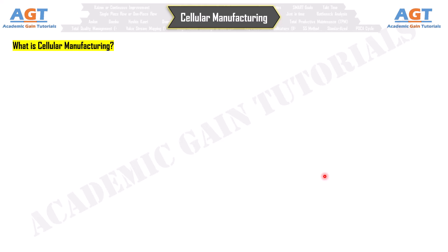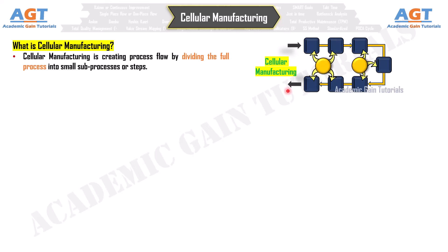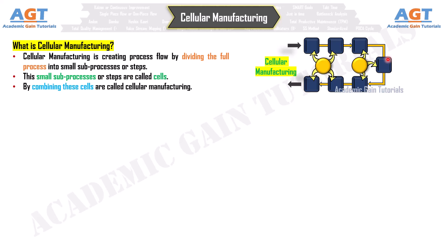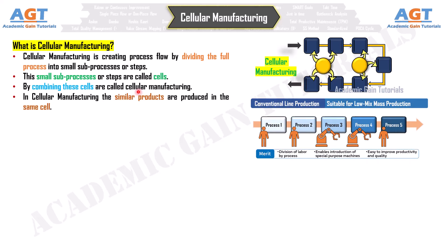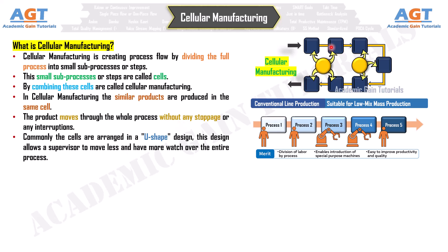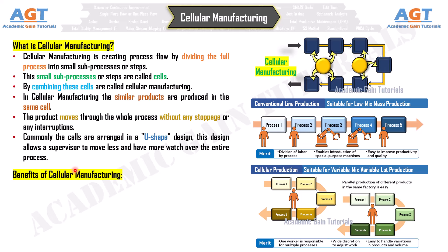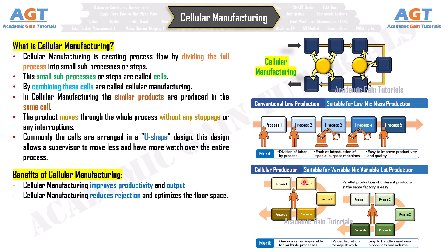Number 18: Cellular Manufacturing. Cellular manufacturing creates process flow by dividing the full process into small subprocesses or steps called cells. Combining these cells is called cellular manufacturing. Similar products are produced in the same cell, and the product moves through the whole process without any stoppage or interruptions. The cells are commonly arranged in a U-shaped design, allowing a supervisor to move less and oversee the entire process. Benefits: Improves productivity and output, reduces rejection, optimizes floor space, enables quick changeover, allows a wide range of similar products in a single line, reduces lead time, and enhances teamwork and communication.